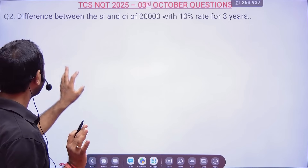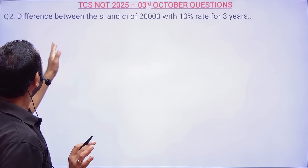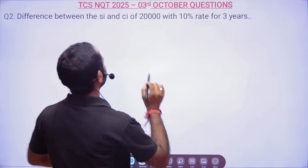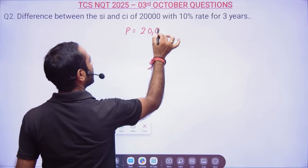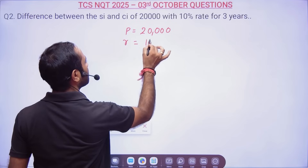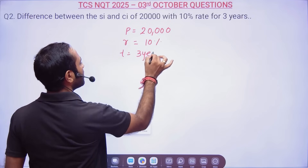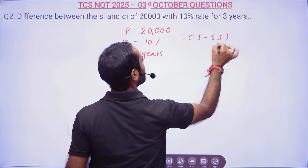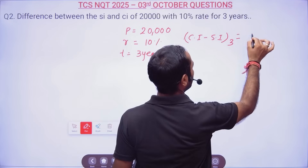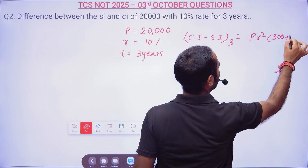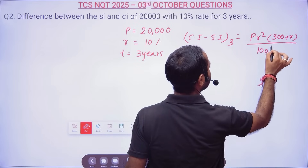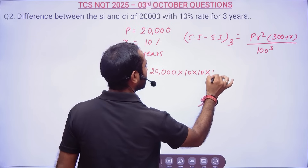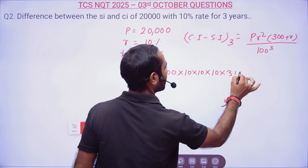Now this problem is done. Question number 2: they are telling you to find out the difference between simple interest and compound interest for 3 years. Principal is given as 20,000, rate is 10%, and time is 3 years. There is a formula for this: PR² × (300 + R) divided by 100³. So principal is 20,000 and rate is 10.